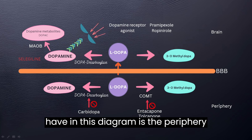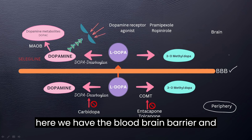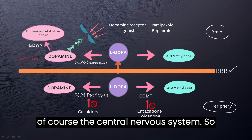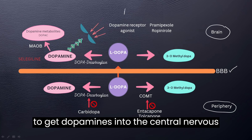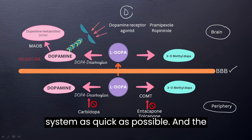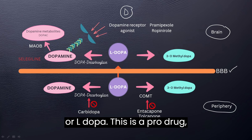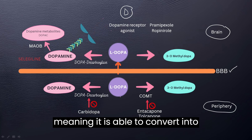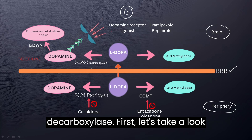What I have in this diagram is the periphery — that is the blood — and here we have the blood-brain barrier and of course the central nervous system. The major goal in Parkinson's disease is to get dopamine into the central nervous system as quickly as possible. The drug we're going to use is levodopa or L-dopa, which is a pro-drug, meaning it is able to convert into dopamine with the help of the enzyme dopa decarboxylase.